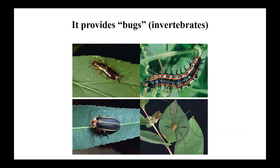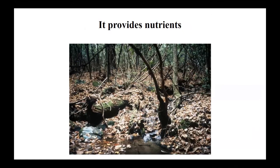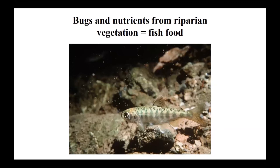Researchers study fish diet by pumping fish stomachs with a syringe to make them regurgitate without killing them — particularly important for protected species like coho. Riparian hardwoods also provide nutrients through leaf litter and organic inputs throughout the year, adding nitrogen that fertilizes the stream, supporting microorganisms that feed invertebrates that feed fish. The riparian corridor thus provides both bug inputs and nutrient inputs that create and sustain fish habitat.